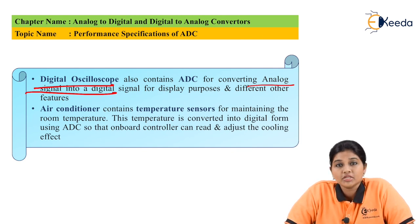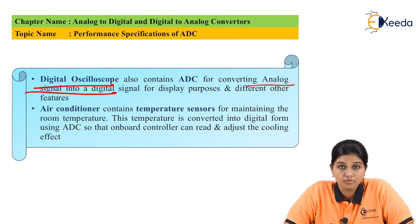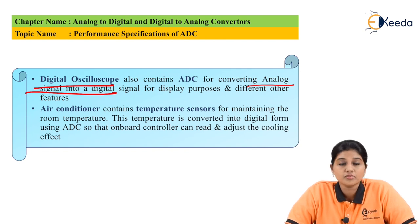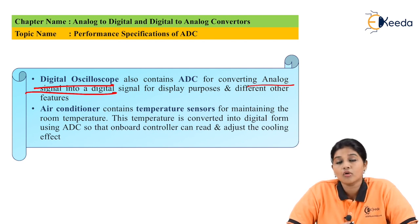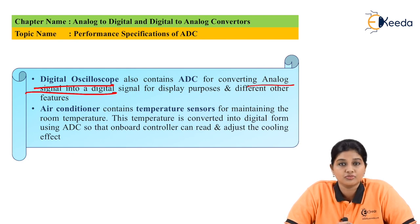There are many more applications where conversion is required, including instrumentation systems, control systems, computer systems, communication systems and many more. So this is what about ADC — the need for ADC, its applications, various types, and the performance parameters on the basis of which ADC can be selected for the proper application. I hope you understood this topic. Thank you very much for watching this video. Stay tuned to Ikeda. Subscribe Ikeda. Thank you.